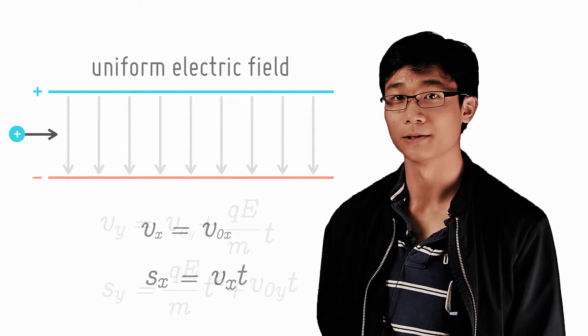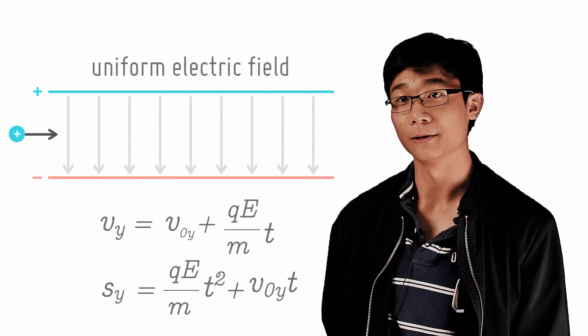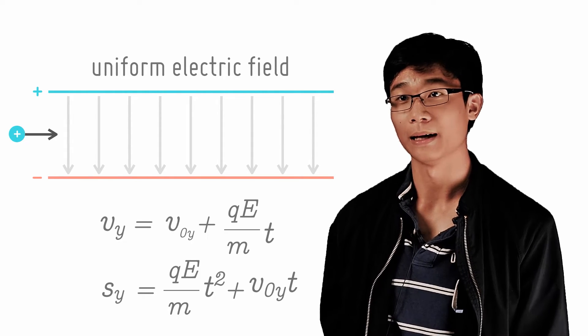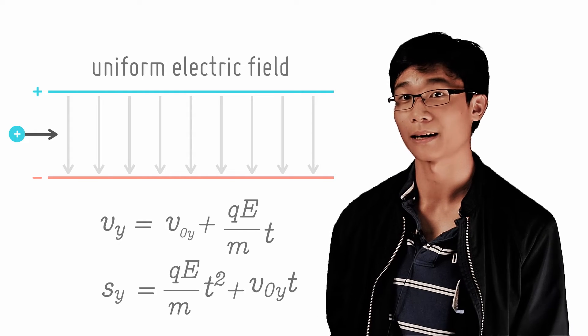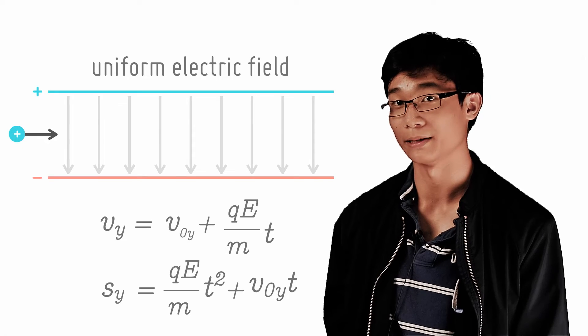The velocity parallel to the acceleration follows the kinematics equation v equals to v0 plus at, and the motion is s equals to v0t plus half at squared, which you should know to be the standard kinematics equations.